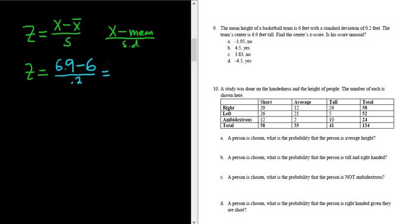Let's plug this all into the calculator. So 6.9 minus 6 is 0.9, then you divide by 0.2. So 0.9 divided by 0.2 is equal to 4.5. So that would be the z-score.